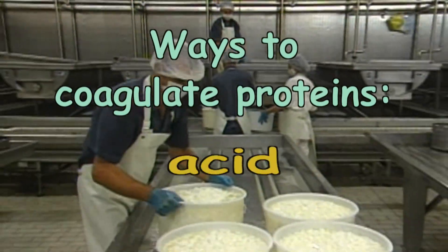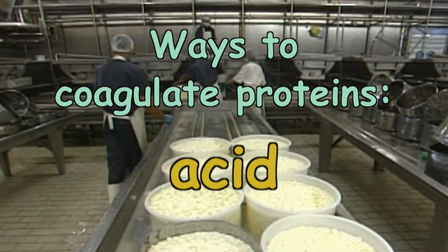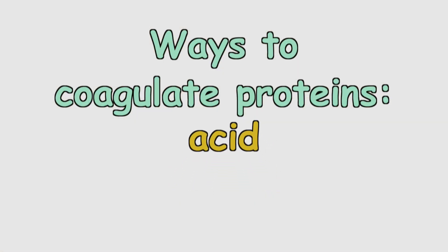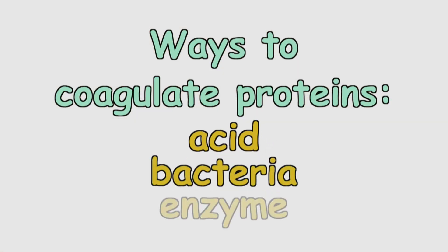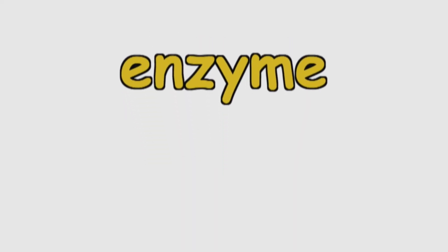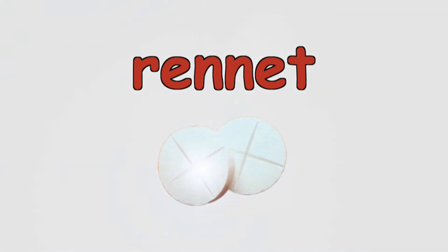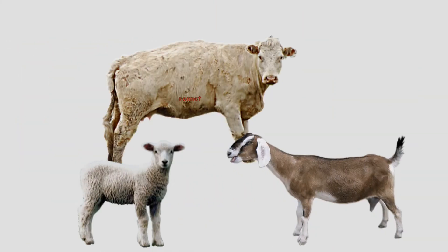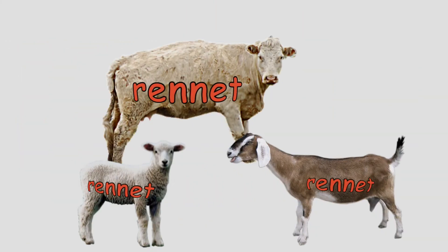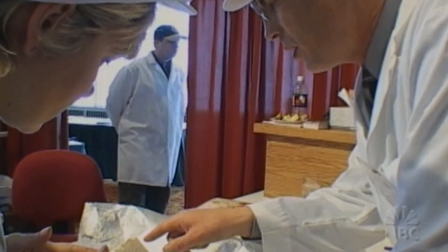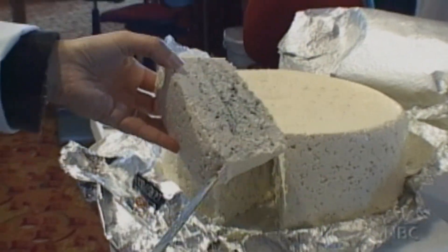There are some fresh cheeses made this way, simply by adding acid. But the majority of cheeses are made another way — they use bacteria and an enzyme to coagulate their proteins. An enzyme called rennet, which cheese makers can buy in tablet form, is actually found in the stomach lining of most animals. It's made to digest milk proteins. Rennet further breaks down the proteins and creates a nice gooey mesh, giving cheeses of different textures.